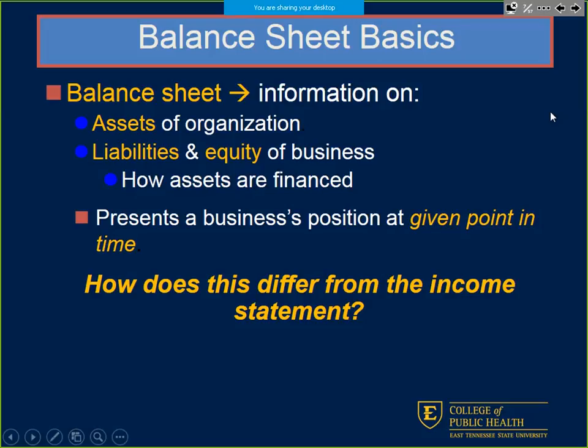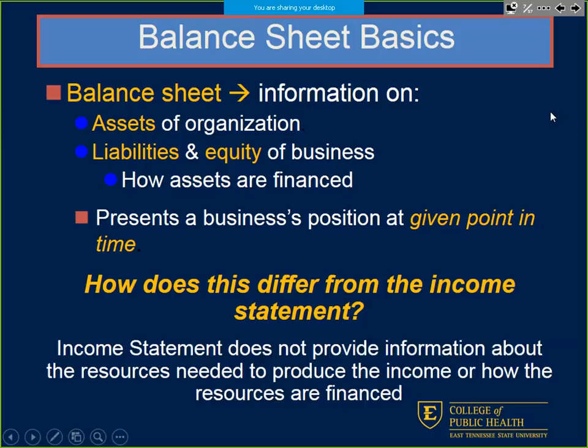How does that differ from the income statement? The income statement covers a full year. On the balance sheet, we're just looking at December 31st, 2015 and December 31st, 2014 — this is our snapshot. The income statement doesn't provide information about how resources are allocated. That's why we need the balance sheet to tell us how we're financing all the assets we've got.